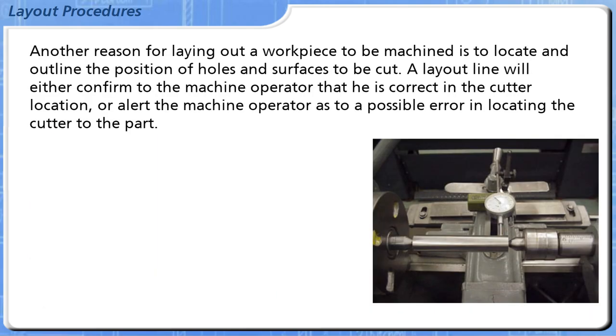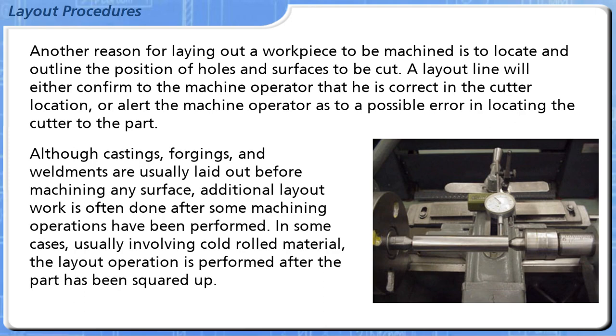Another reason for laying out a workpiece to be machined is to locate and outline the position of holes and surfaces to be cut. A layout line will either confirm to the machine operator that he is correct in the cutter location, or alert the machine operator as to a possible error in locating the cutter to the part.